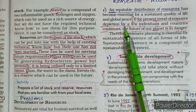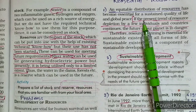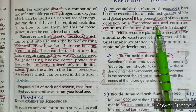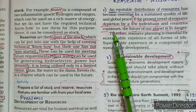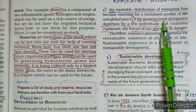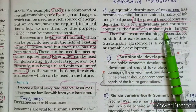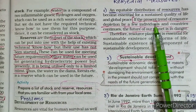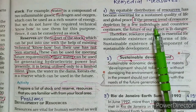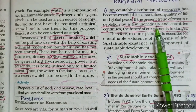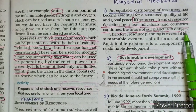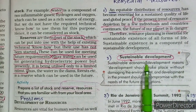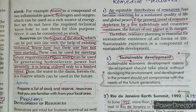But if the present trend of resource depletion by few individuals and countries continues at such speed, then the future of our planet is in danger. If we do not stop such indiscriminate use of resources, the future of our planet will be in danger. The second remedial measure is sustainable development.